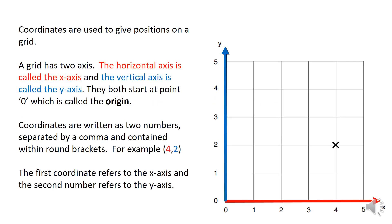What are coordinates? Coordinates are used to give positions on a grid. Over here is a grid — it has an x-axis, which is the horizontal axis along here, and it also has a vertical axis called the y-axis. Both of these axes start at zero, and this point is called the origin. Coordinates are written as two numbers separated by a comma and contained within brackets.